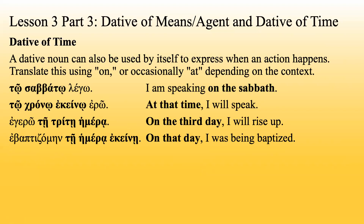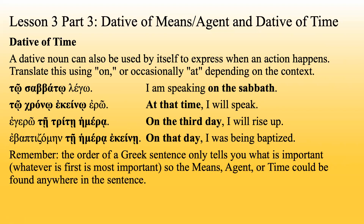'E baptizomen te hemera ekene' — 'On that day, I was being baptized.' Remember, the order of a Greek sentence only tells you what is important — whatever is first is most important. So the means, agent, or time could be found anywhere in the sentence. For the first two sentences, the fact that it's on the Sabbath is the focus. For the second, the focus is 'at that time, I will speak.' For the third, the focus is 'I will rise up,' with the day as additional information. And here, 'I was being baptized' is the focus, with 'on that day' as additional information.